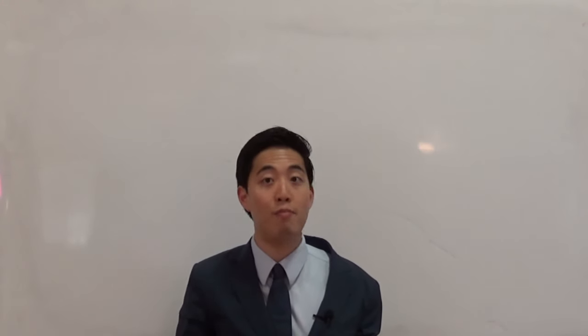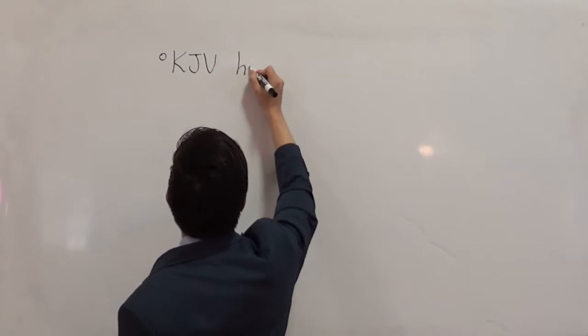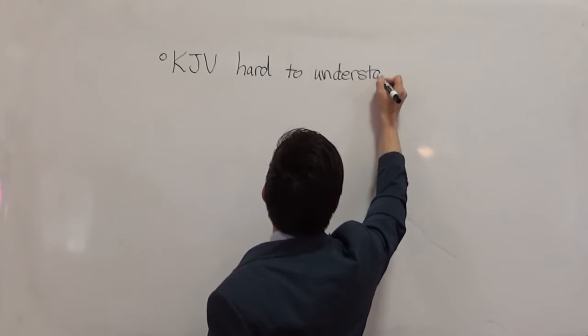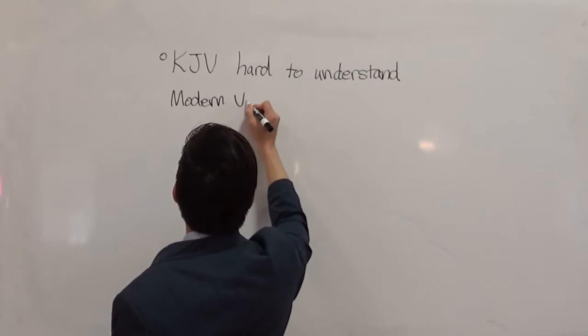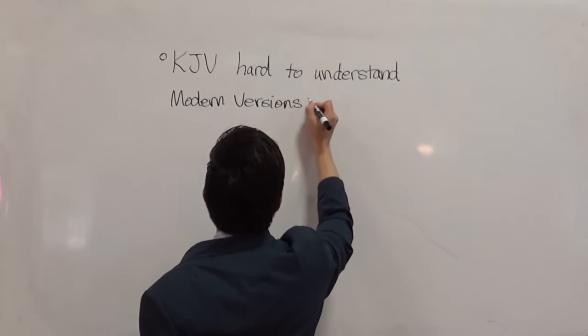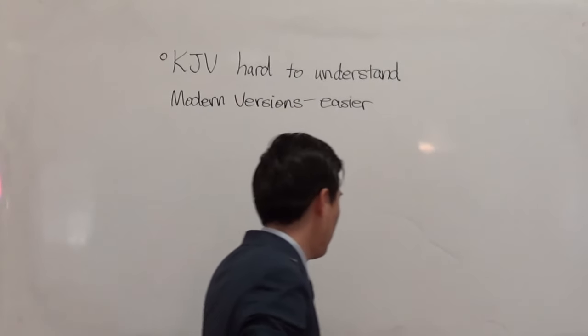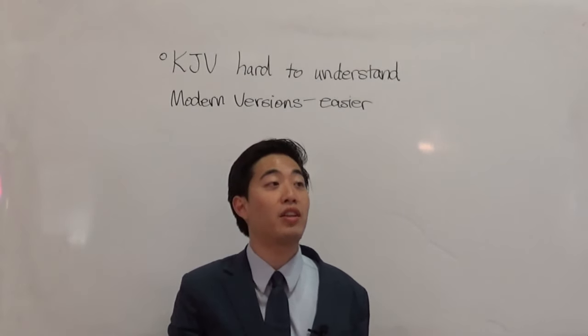Now we'll cover some main arguments used against the King James Bible. The first and most famous argument is that the King James Bible is hard to understand — that's why people go to modern versions, because they're easier. The response: if the Bible were made very easy to understand, that would not be the Word of God.